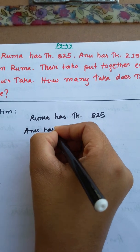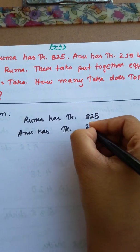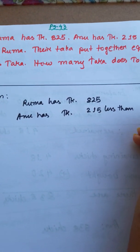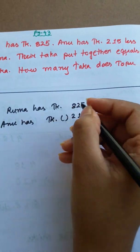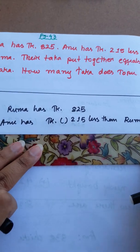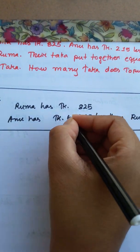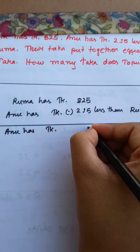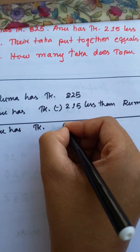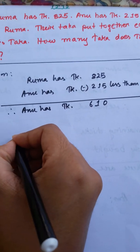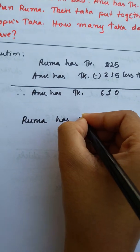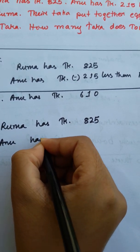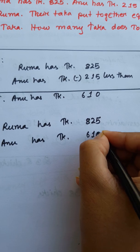Anu has Taka 215 less than Ruma, so Anu has Taka 610. Ruma has Taka 825, Anu has Taka 610.